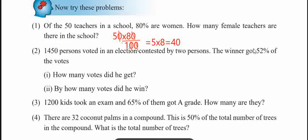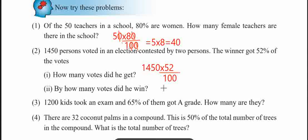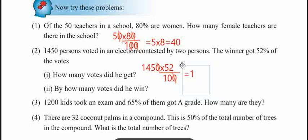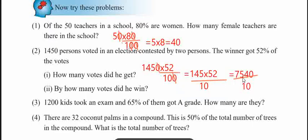He got 52% of the vote. We calculate 1450 × 52 by 100. So 145 into 52 by 10, which gives 45 into 52 equals 3540. The answer divided by 10 gives 3.